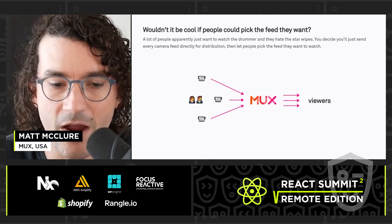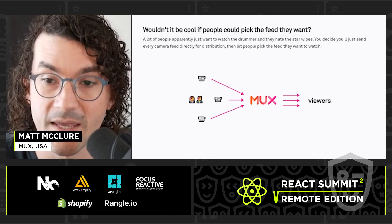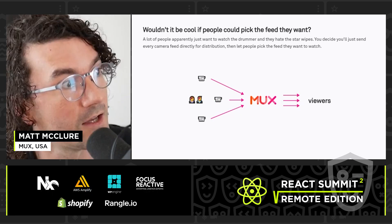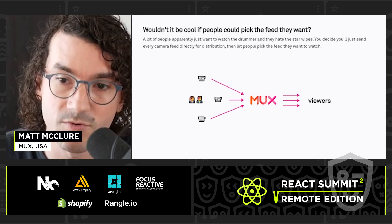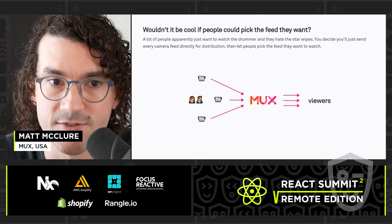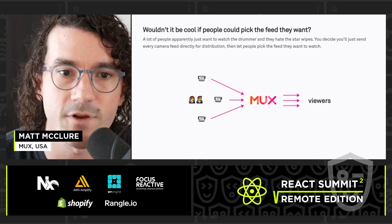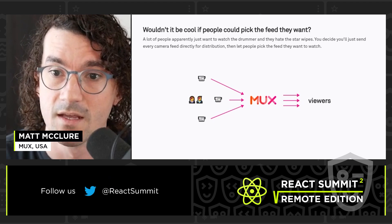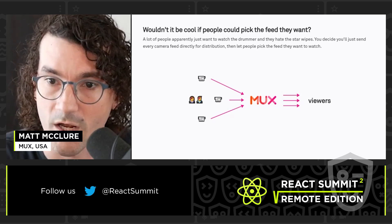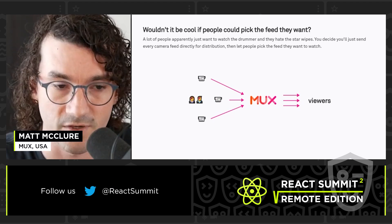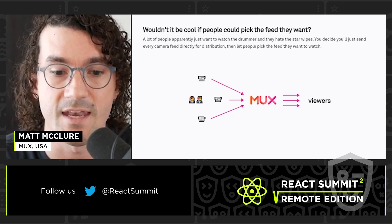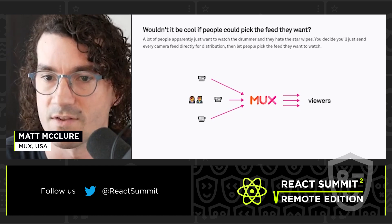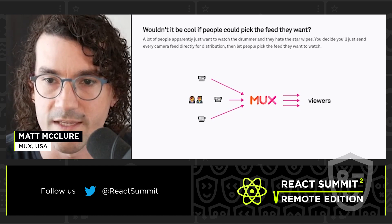So they want the power to be able to pick which feed they watch. So you decide, how can we go about building this out? You start thinking: I'll send every camera directly to that encoder or broadcast service, and then every viewer can get all the feeds. In this example, three feeds.